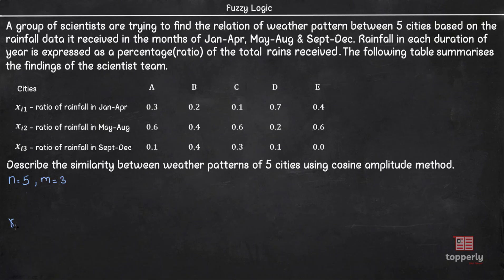Now, using cosine amplitude method we have Rij equal to sigma k equal to 1 to 3 (xik times xjk) the whole by square root of sigma k equal to 1 to 3 xik square times sigma k equal to 1 to 3 xjk square. Here you should note that the values of i and j vary from 1 to n.